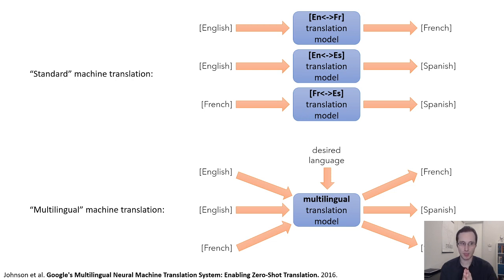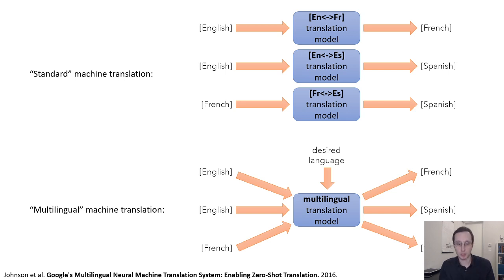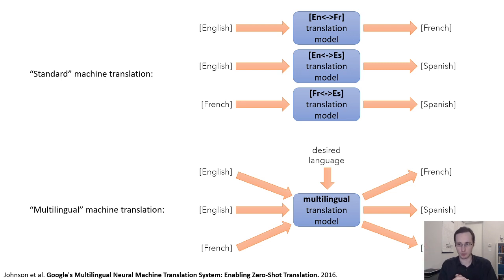Another thing such a model could do is perform translation without requiring a particular pairing. If you've translated English into Spanish, English into French, and English into Japanese, the model has built up some internal representation of English sentences. So if you then train on translating Japanese into Chinese but have never translated English into Chinese, the model may figure out that an English sentence can be turned into some universal representation that can then be decoded into any language you want.